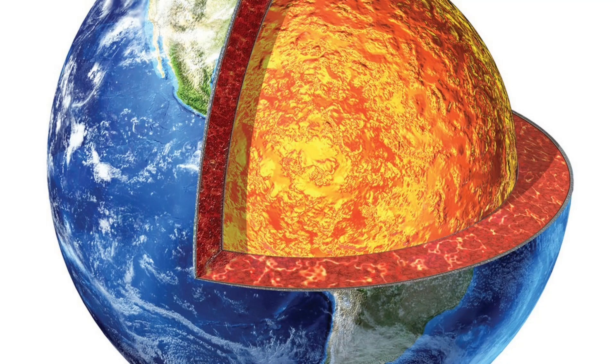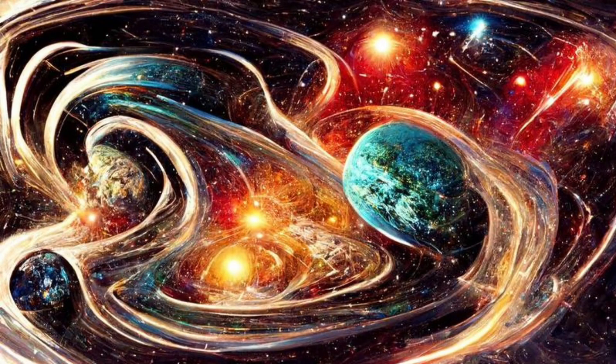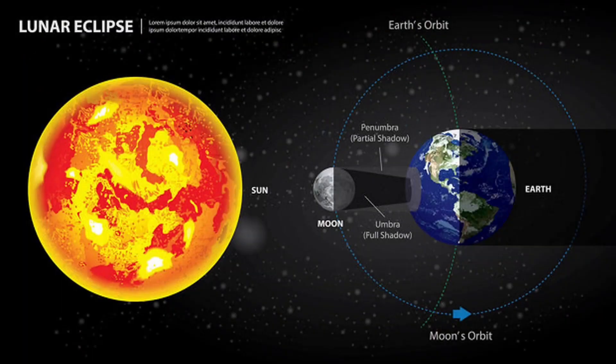The formation of Earth is a complex and fascinating process that occurred over billions of years. It is generally believed to have taken place through a series of cosmic events. Here's a simplified overview of how Earth was formed: solar nebula, about 4.6 billion years ago.